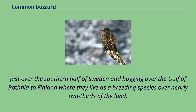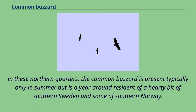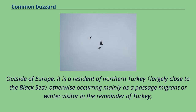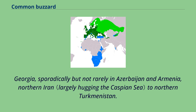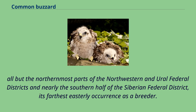The common buzzard reaches its northern limits as a breeder in far eastern Finland and over the border to European Russia, continuing as a breeder to the narrowest straits of the White Sea and nearly to the Kola Peninsula. Outside of Europe, it is a resident of northern Turkey, otherwise occurring mainly as a passage migrant or winter visitor in the remainder of Turkey, Georgia, sporadically in Azerbaijan and Armenia, and northern Iran to northern Turkmenistan. The common buzzard is found in much of western Russia including all of the central and Volga federal districts, nearly the southern half of the Siberian federal district as its farthest easterly breeding occurrence. It is also found in northern Kazakhstan, Kyrgyzstan, far northwestern China and northwestern Mongolia.